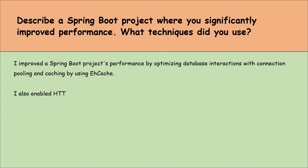How does Spring Boot make dependency injection easier compared to traditional Spring? Spring Boot makes DI easier by auto-configuring beans and reducing the need for explicit configuration. In traditional Spring, we had to define beans and their dependencies in XML files or with annotations, which can be complex for large applications. In Spring Boot, we use auto-configuration and component scanning to automatically discover and register beans based on the application's context and classpath. Spring Boot intelligently figures out what's needed and configures it for us, allowing us to focus more on writing business logic rather than boilerplate configuration code.